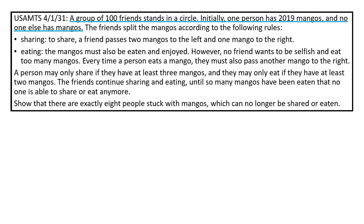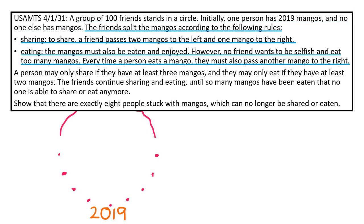A group of 100 friends stand in a circle. Initially, one person has 2019 mangoes and no one else has mangoes. The friends split the mangoes according to the following rules. Sharing. To share, a friend passes two mangoes to the left and one mango to the right.